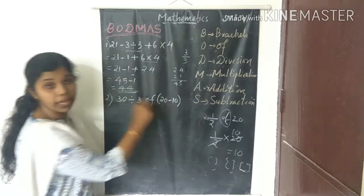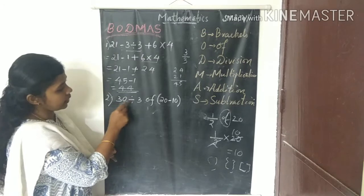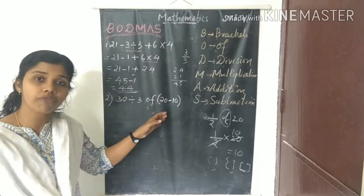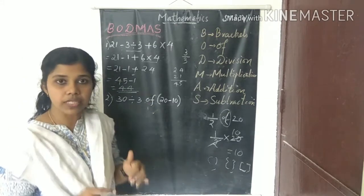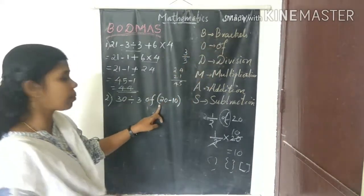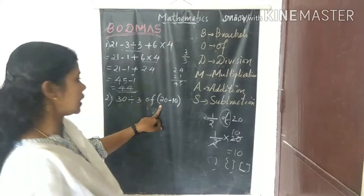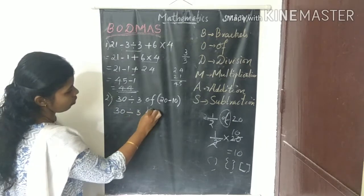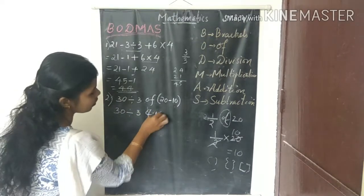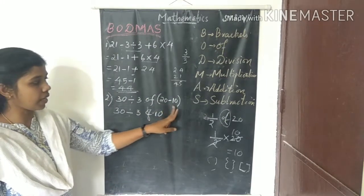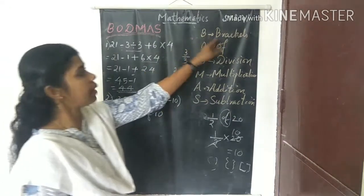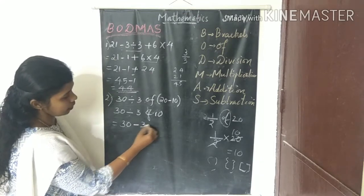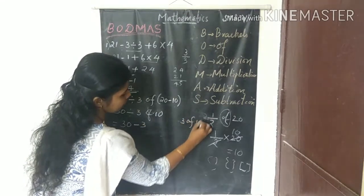Next question: 30 ÷ 3 of (20 - 10). First, which operation do we do? Brackets come first, so we do the operation inside the bracket. 20 minus 10 equals 10. After solving the bracket, the next operation is 'of' function.